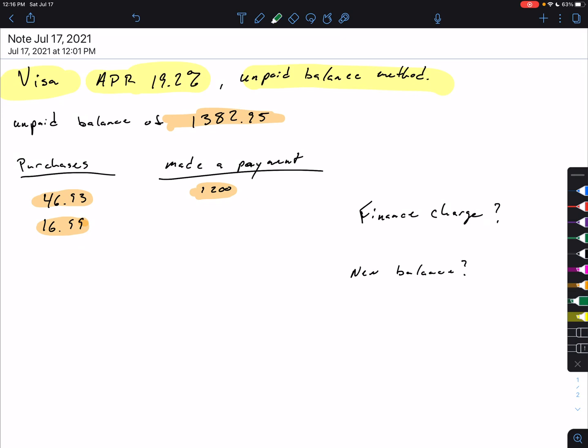And what we need to figure out is what the finance charge is going to be for this month, and then what our new balance would be using the unpaid balance method. So the first thing you want to do is calculate that finance charge.